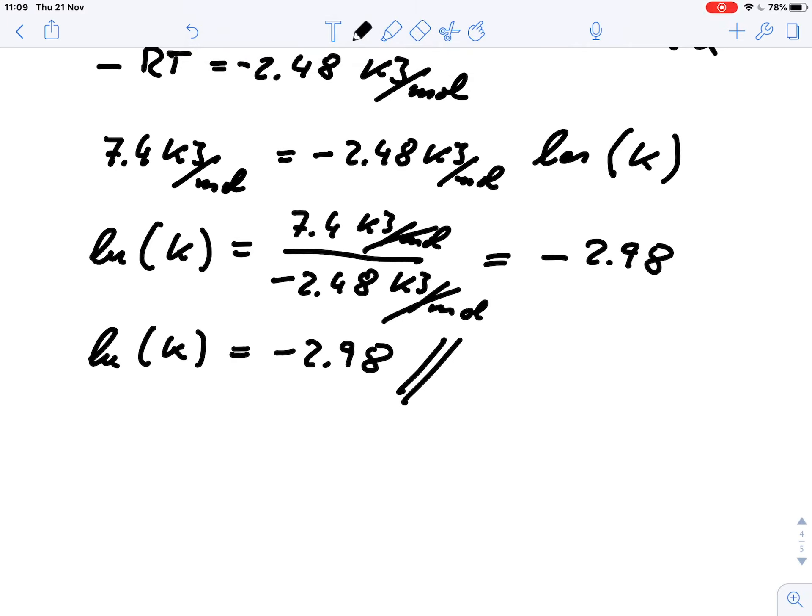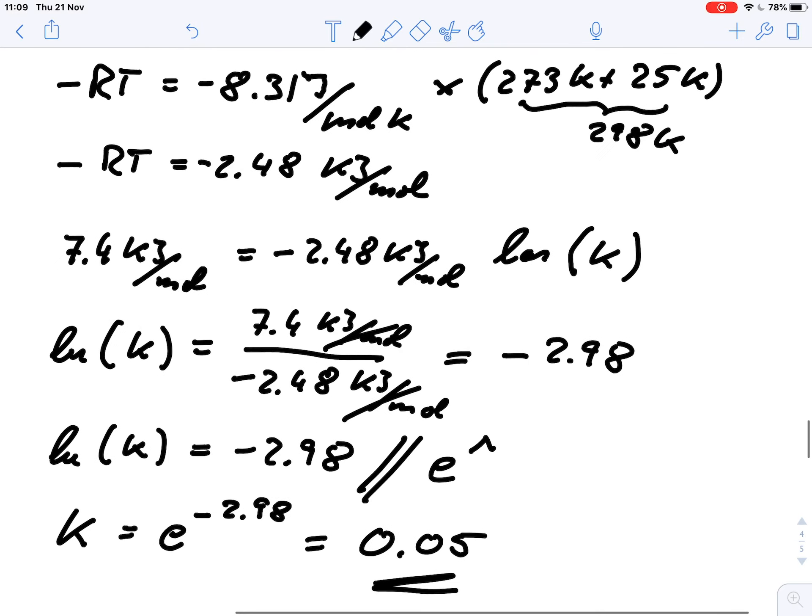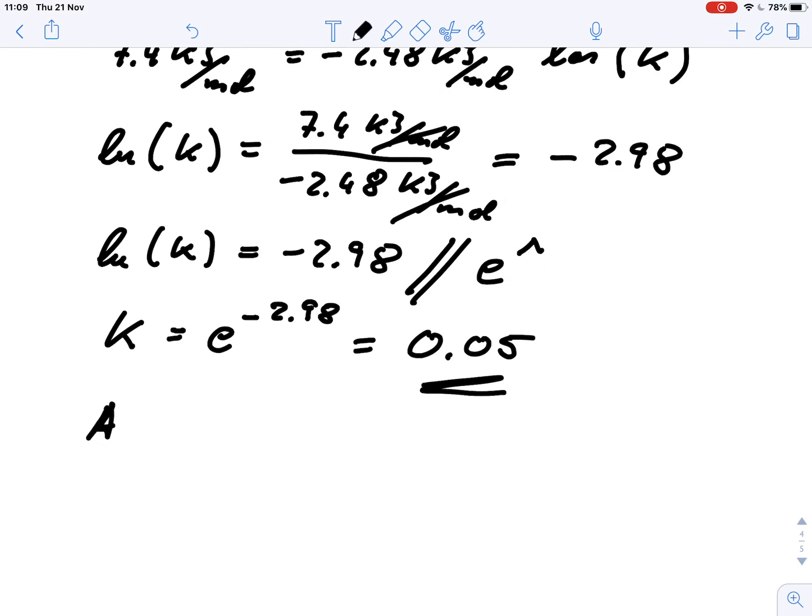And in order to get our equilibrium constant we just simply E both sides. So we get our equilibrium constant equals E to the power of minus 2.98. And that is roughly 0.05.